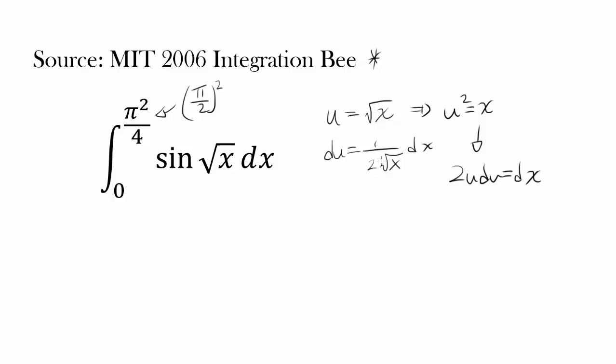I mean, you can still make a substitution u into this, but I feel like this is a faster way. So u squared is x. So 2u du is dx. So let's rewrite this.